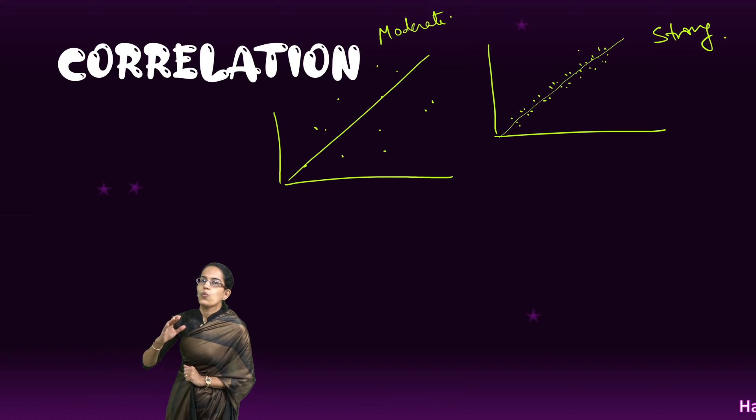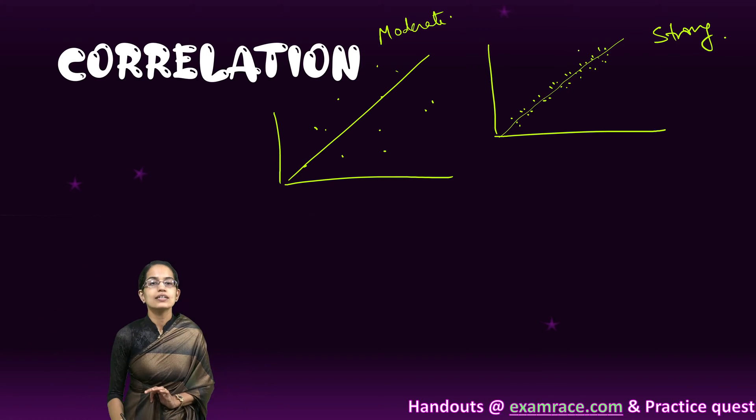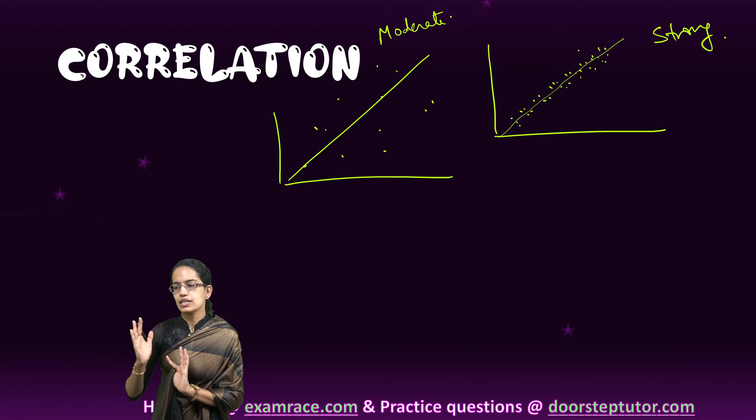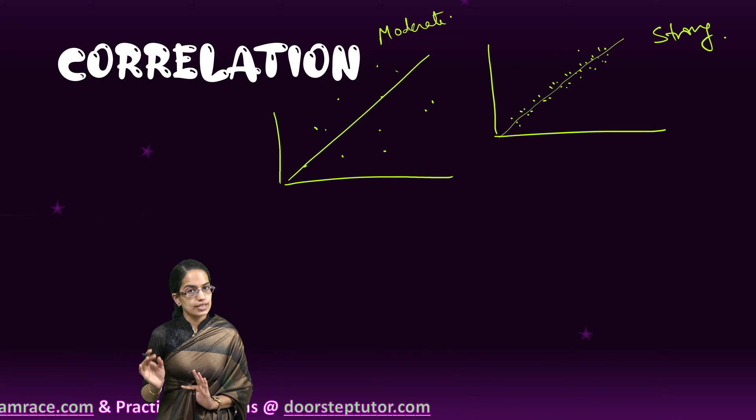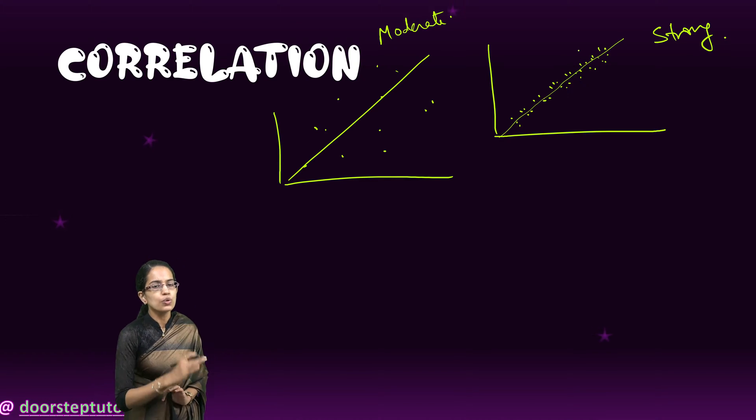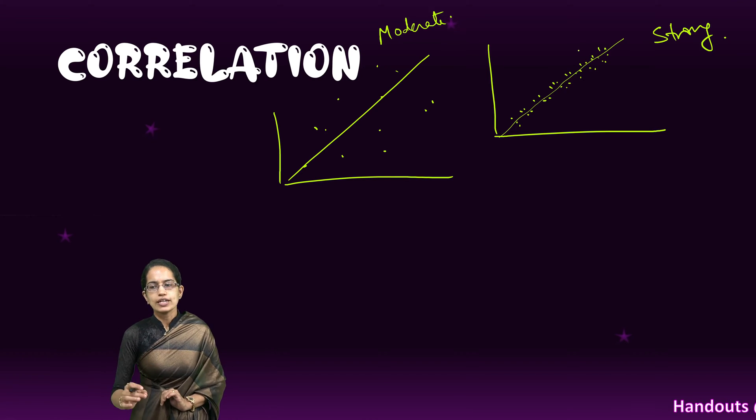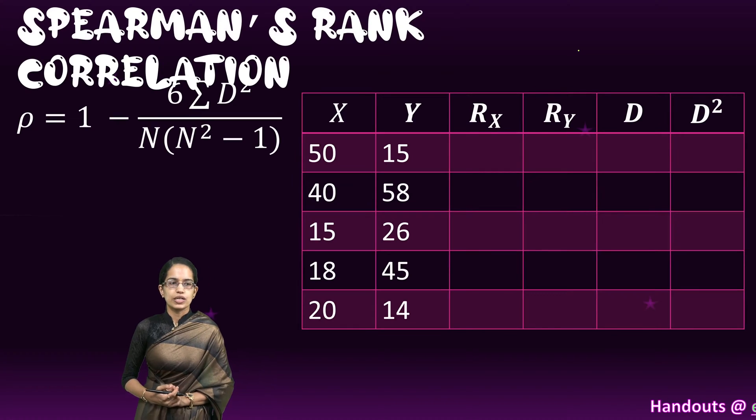Also, when there is more scattering of data, the correlation becomes weak. If the data is more clustered, it would have a stronger correlation. How do we find out the correlation? There are numerous methods. In this section, we would understand one very simple method and that is Spearman's rank correlation.